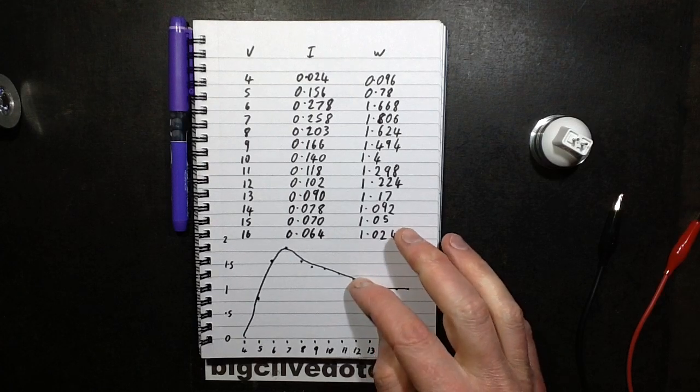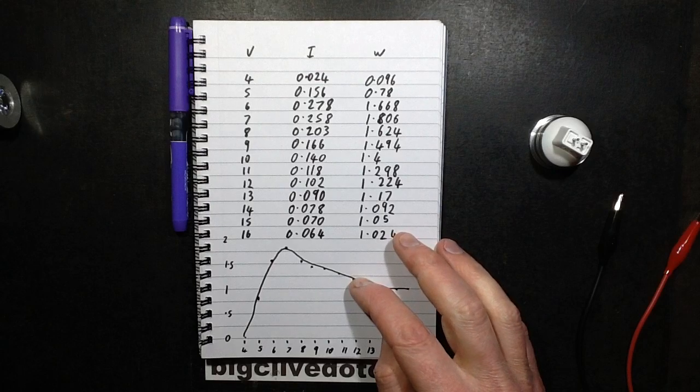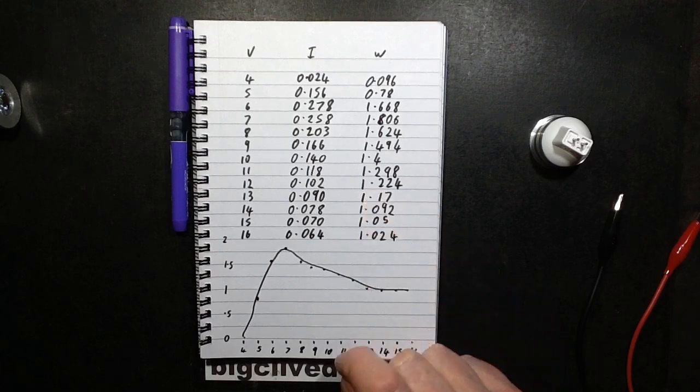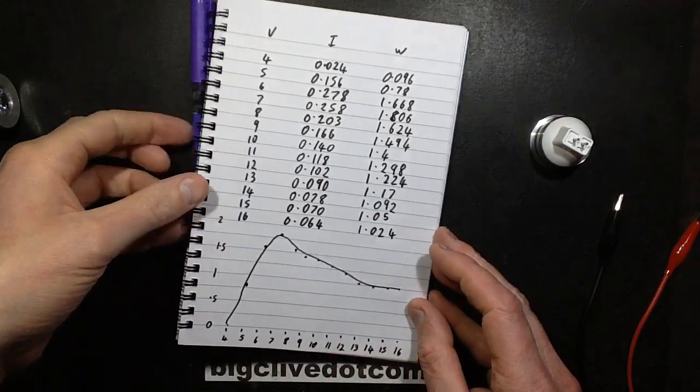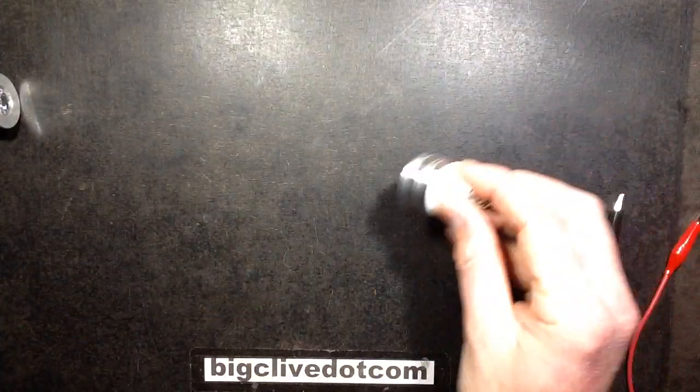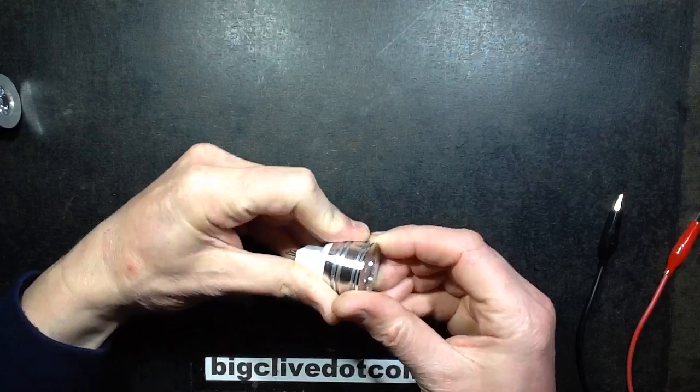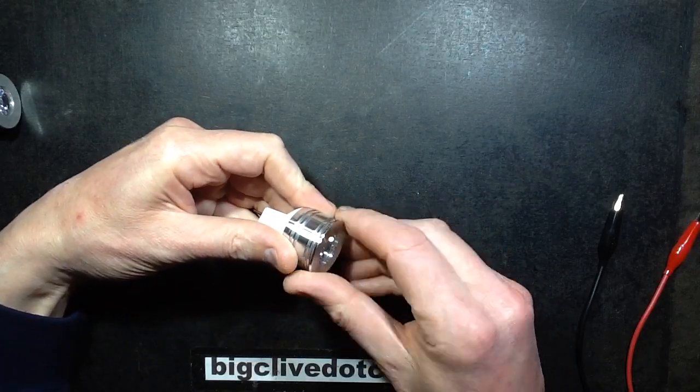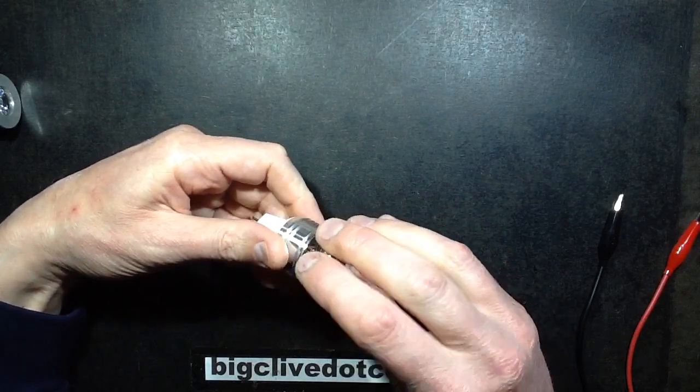At 12 volts, what I think it would be designed for, it was dissipating 1.2 watts. So, odd. Strange. It makes me wonder, is there a chip in this or is it just discrete circuitry? There's only one way to find out. So off comes the lens, off comes the cover.